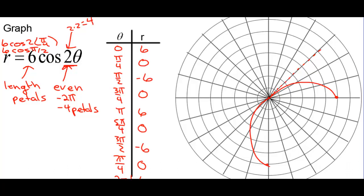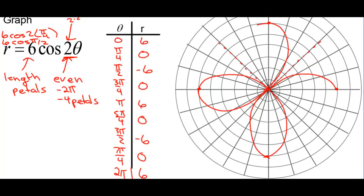At 3 pi over 4, we're at 0, so when we're at an angle of 3 pi over 4, we're back to 0. At pi, we're at 6, so it loops around like that. At 5 pi over 4, we're at 0, so it loops around to 5 pi over 4. At 3 pi over 2, we're at negative 6, so it loops around up here. At 7 pi over 4, we're at 0 again, so it goes back to 0. Then from 7 pi over 4 to 2 pi, we're back to 6, back to where we started. So there's the four petals. Those petals should look exactly the same, but there's of course a little bit of human error.